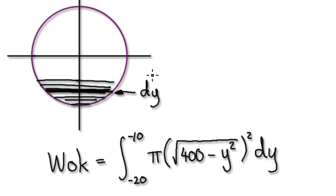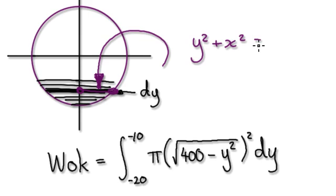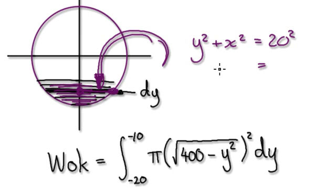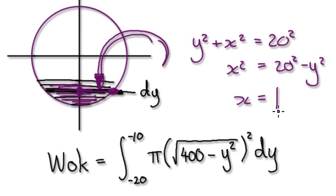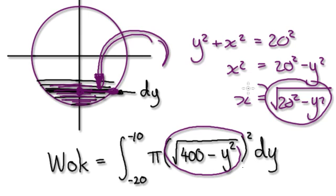What is the radius of this particular disc? The radius would be from here to here. Don't forget we've got y² + x² = 20². As you're integrating — as you're moving up — the y varies, but the radius from here to here is √(400 − y²). As y moves up, the radius is given by √(400 − y²). So this here is your radius.